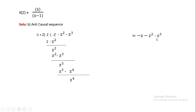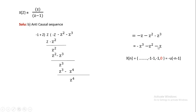The quotient obtained is -z - z² - z³ - ..., which is an infinite duration left-side sequence. So x(n): at the constant term, value is 0; at z, value is -1; at z², value is -1; at z³, value is -1. This signal is represented as -u(-n-1). Therefore, for z/(z-1): for the causal sequence, x(n) = u(n); for the anti-causal sequence, x(n) = -u(-n-1).